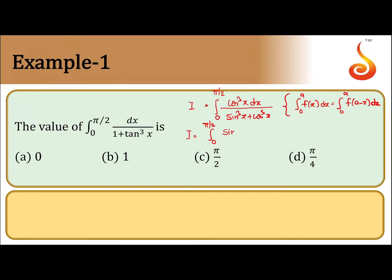Cos of pi by 2 minus x is sin, therefore it becomes sin cube x dx by cos cube x plus sin cube x. So this is equation 1 and this is equation 2.